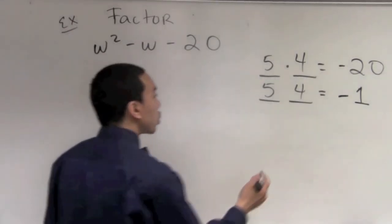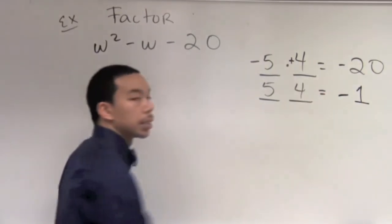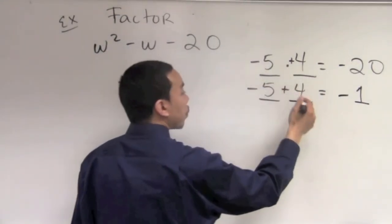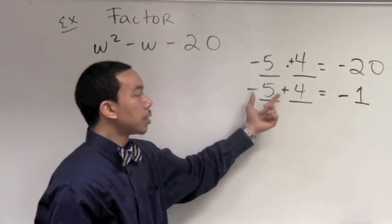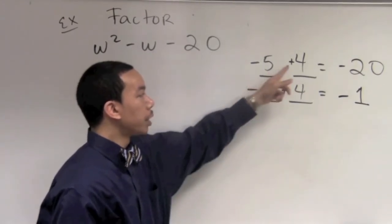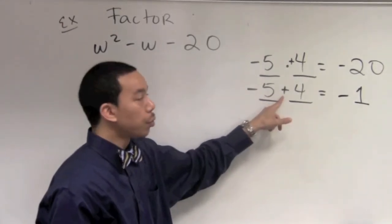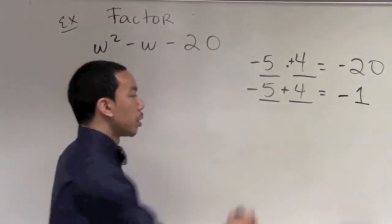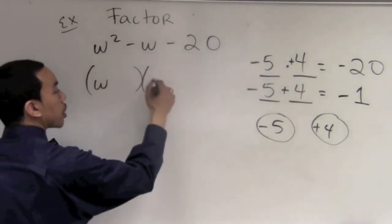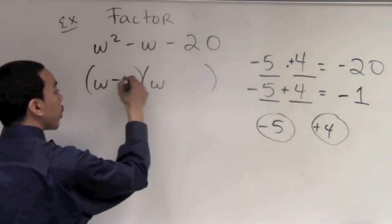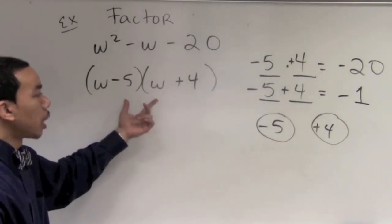If we plug in negative 5 and positive 4, then negative times positive is negative — that gives us negative 20. And negative 5 plus positive 4: signs are different so we subtract, getting 1 and taking the sign of the larger magnitude number, giving us negative 1. Note we could not use positive 5 and negative 4 — it would work for multiplication but would give positive 1 instead of negative 1. So we use negative 5 and positive 4, and factor w squared minus w minus 20 into (w minus 5) times (w plus 4).